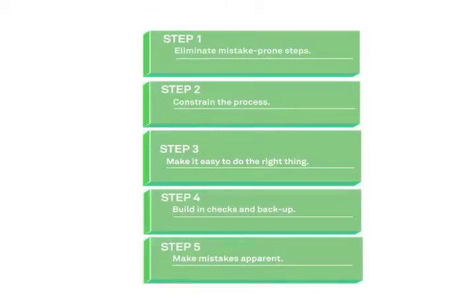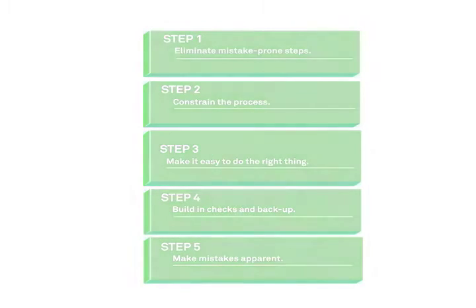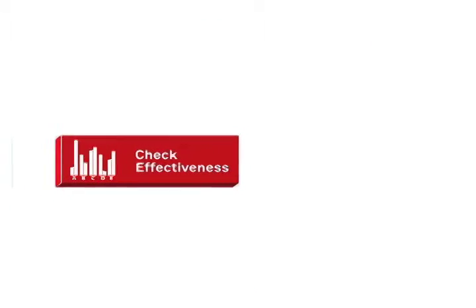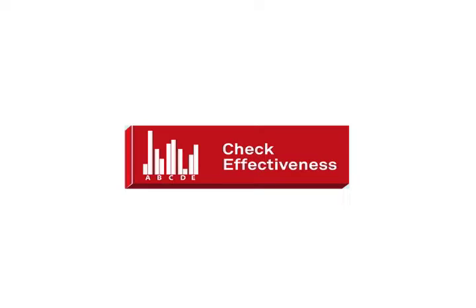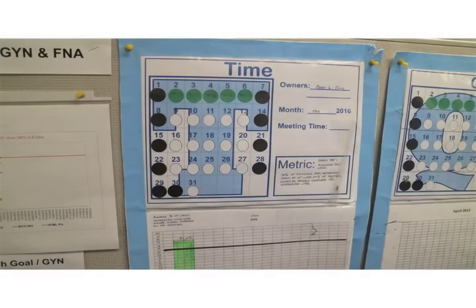After applying these five sets of tactics, the final phase in the process is to check effectiveness. We may be excited about our analysis and the mistake proofing ideas we applied, but did they work in the real world? Was the intervention effective in preventing mistakes?